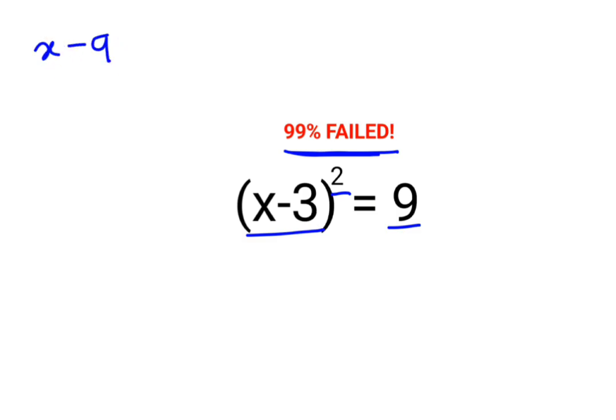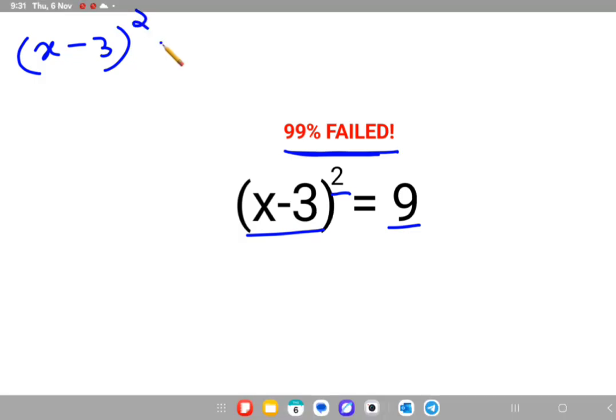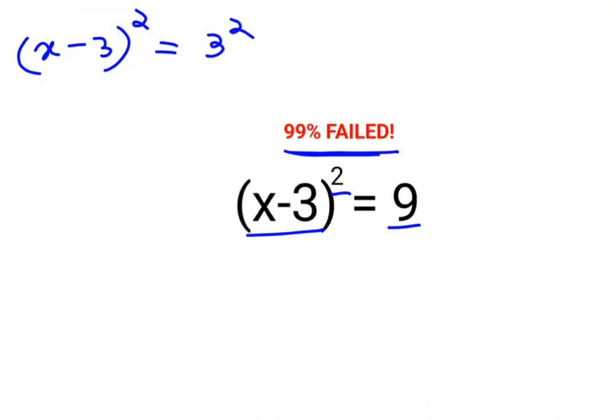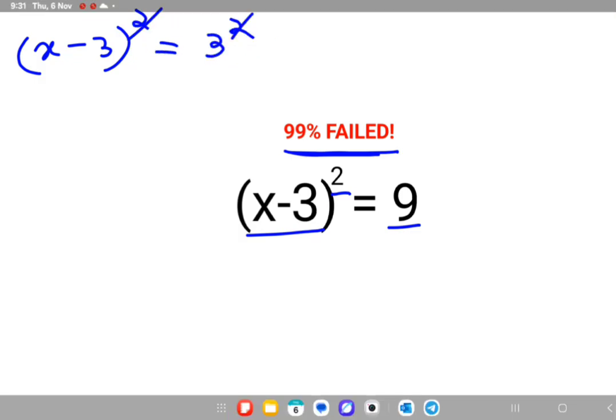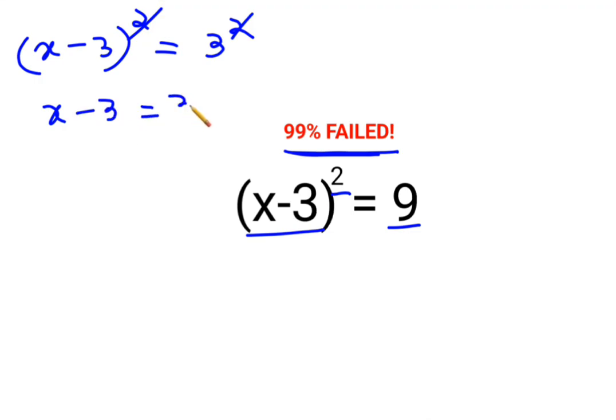This is basically (x-3)² equals 3². So you can just take the square root on both sides, so x-3 equals 3. When you take the negative 3 on the other side, it gets added to the positive 3, which gets you 6. This case is correct.